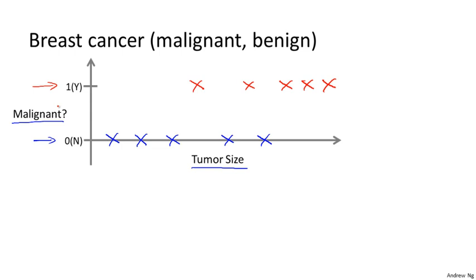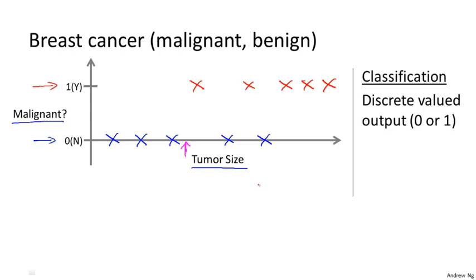And let's say a friend who tragically has a breast tumor, and let's say her breast tumor size is maybe somewhere around this value. The machine learning question is, can you estimate what is the probability, what is the chance that the tumor is malignant versus benign? To introduce a bit more terminology, this is an example of a classification problem. The term classification refers to the fact that here we're trying to predict a discrete valued output, 0 or 1, malignant or benign.